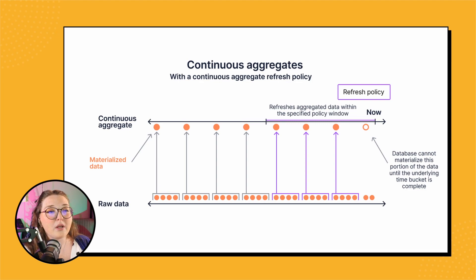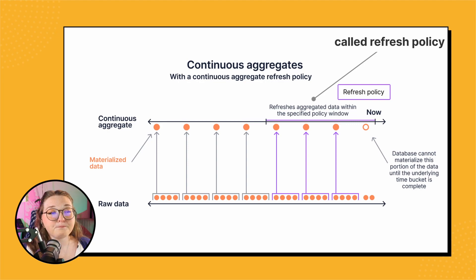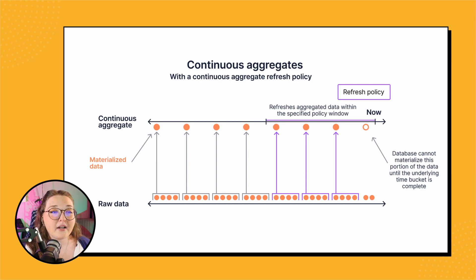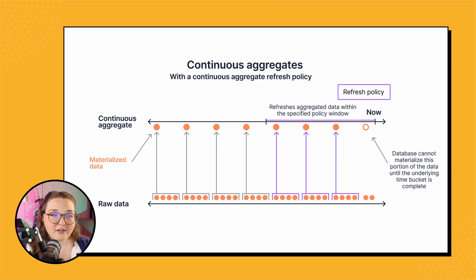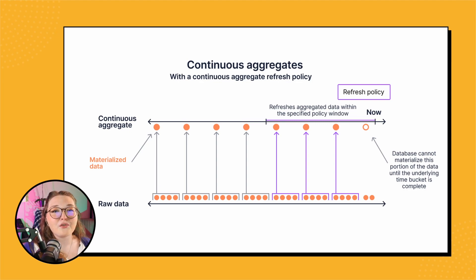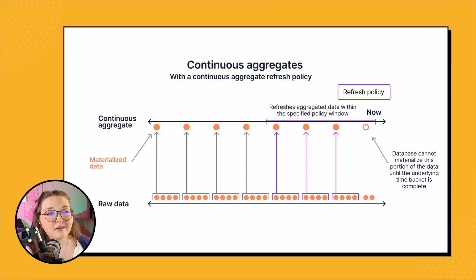The top line represents the continuous aggregate data materialized over time. Now we have more data and we're calling a refresh policy. The purple represents buckets of time that are getting aggregated and materialized. Those small orange dots from the raw data have not been aggregated and materialized yet into the continuous aggregate, so it's taking all those fully finished time buckets and aggregating and materializing that data.